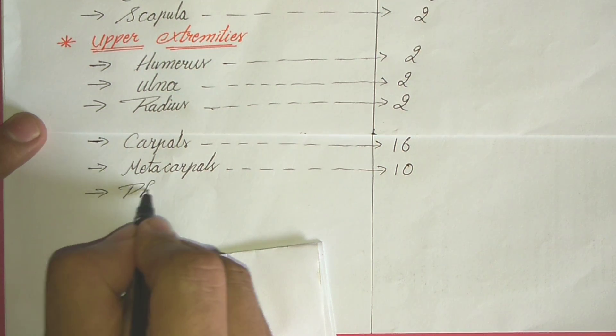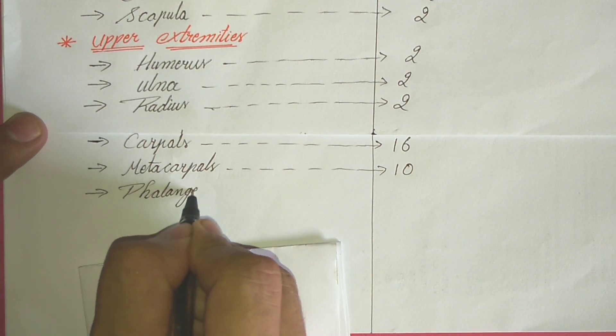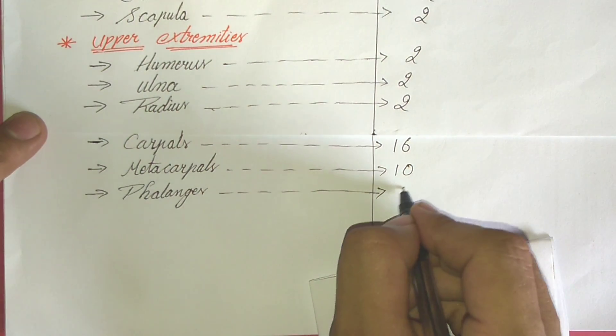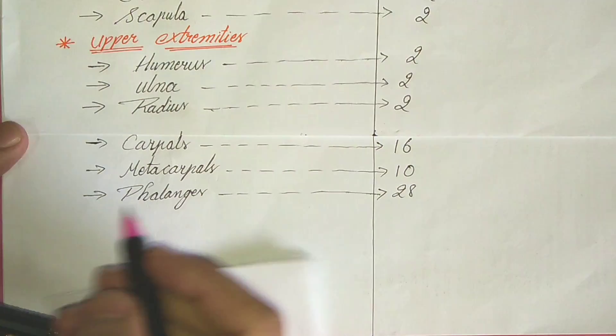Metacarpal bone, total 10 in number. And phalanges. How many phalanges are there? Comment it below. 28. Very good.